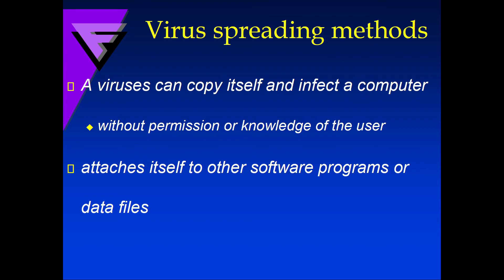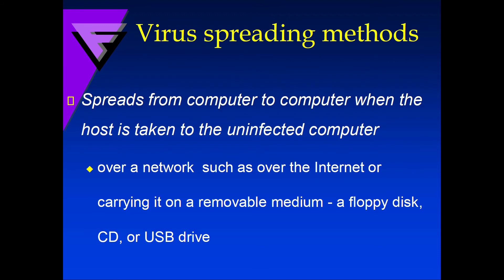Virus Spreading Methods: a virus can copy itself and infect a computer without the permission or knowledge of the user. It attaches itself to other software programs or data files, and spreads from computer to computer when the host is taken to an uninfected computer over a network such as the internet, or by carrying it on removable media.